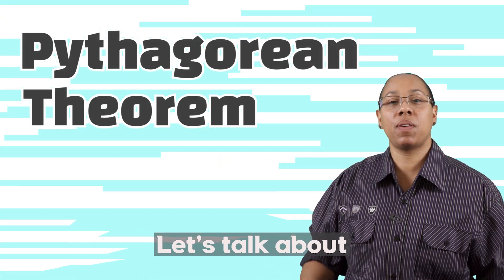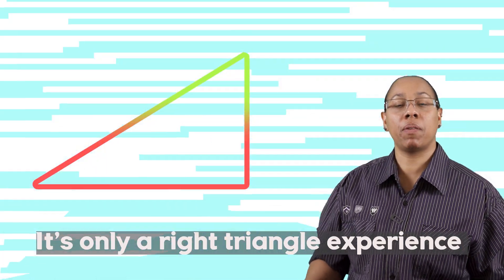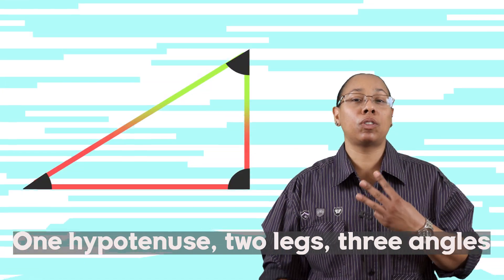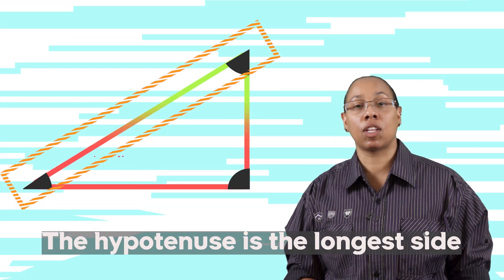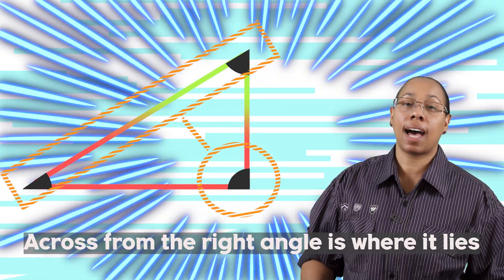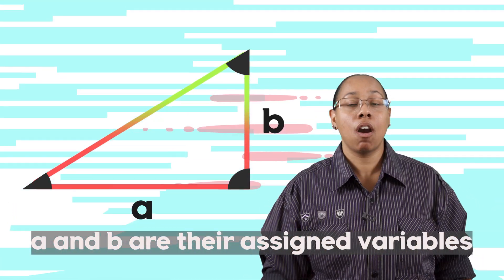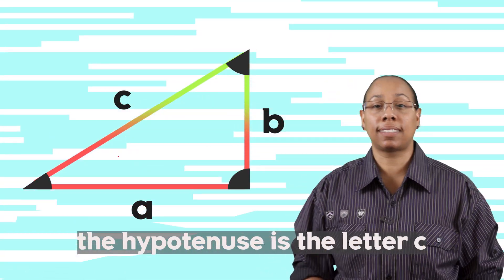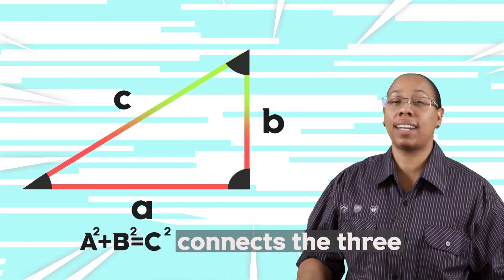Let's talk about Pythagorean Theorem. It's only your right triangle experience. One hypotenuse, two legs. Three angles, the right angle's the biggest. The hypotenuse is the longest side. Across from the right angle's where it lies. And the legs meet at the right angle. A and B are their assigned variables. The hypotenuse gets the letter C. A squared plus B squared equals C squared connects to three.